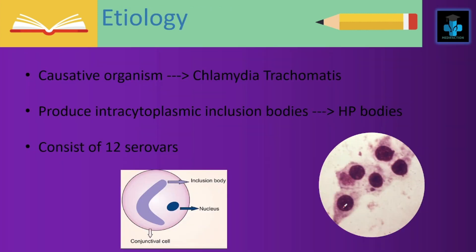Etiology: The causative organism for trachoma is Chlamydia trachomatis. They produce intracytoplasmic inclusion bodies known as HP bodies, and they consist of 12 serovars.